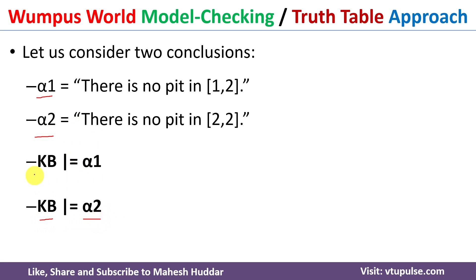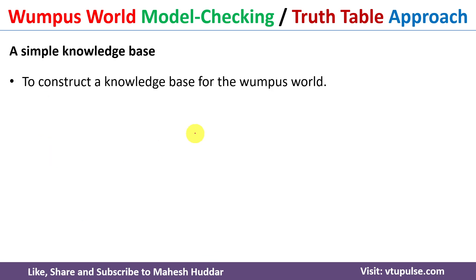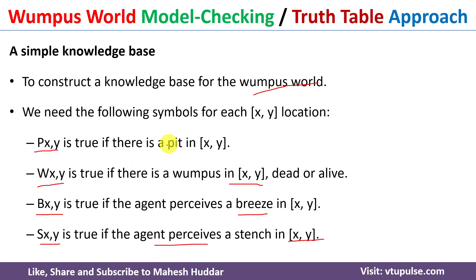Now we need to construct the knowledge base. First, we decide what notations to use for the Wumpus World. I will use: P(x,y) is true whenever there is a pit in x,y; W(x,y) is true whenever there is a Wumpus in x,y; B(x,y) is true whenever the agent perceives breeze in x,y; and S(x,y) is true whenever the agent perceives stench in x,y.